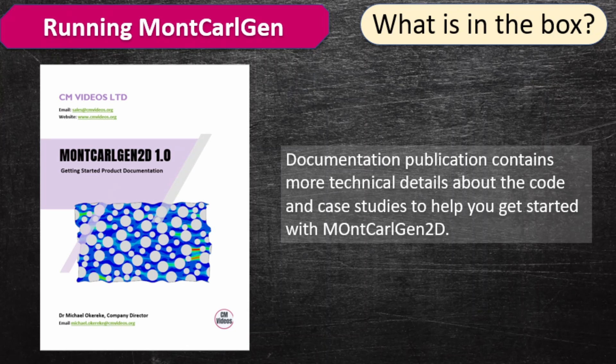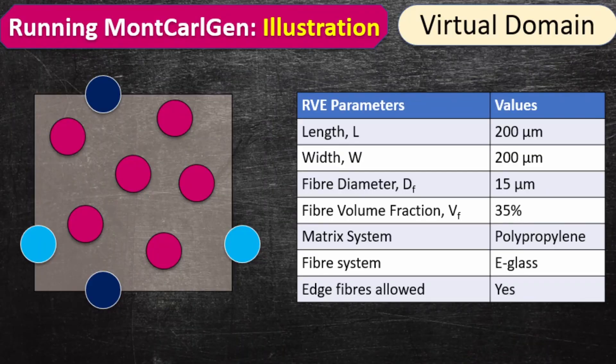You will also see the documentation in the download section of this video. The link to download the code is in the description section. I'm going to illustrate this using a case study of a unidirectional composite. The parameters: the virtual domain will be 200 by 200 microns, the fibre diameter will be 50 microns, and the volume fraction is 35%. The matrix system is polypropylene with glass fibre, and I'm going to allow fibres to appear on the edge.